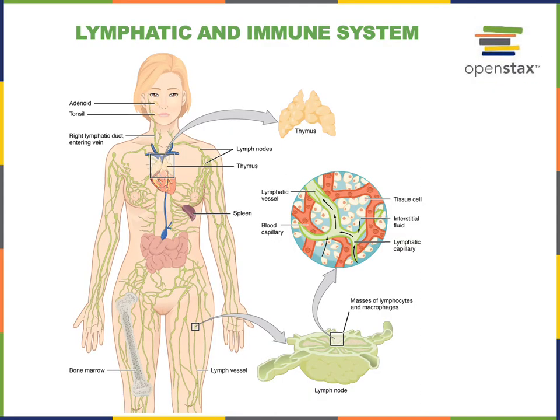This illustration shows us the major lymphoid organs. The bone marrow and the thymus are known as the primary lymphoid organs, whereas the rest of the lymphoid organs, like the spleen and the lymph nodes, are secondary lymphoid organs.